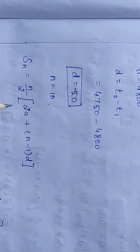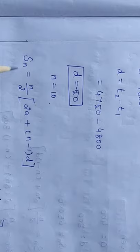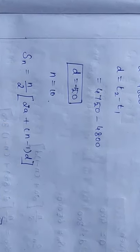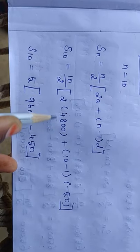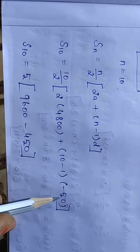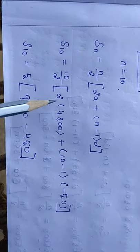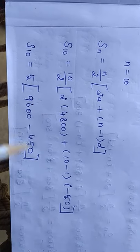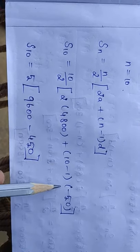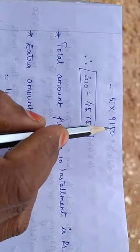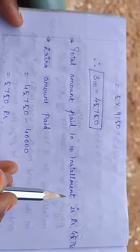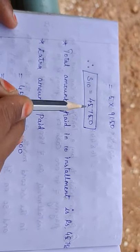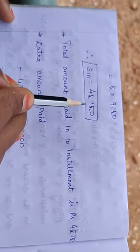Total amount paid in 10 installments. Using Sn = n/2 × (2a + (n-1)d), with a = 4800, d = -50, n = 10, the total amount paid comes out to Rs.45,750.